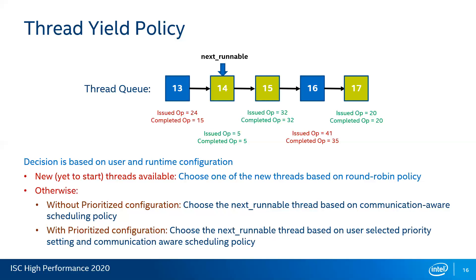In addition, we also provide the user an option to specify a prioritized configuration setting. A user might want to put a priority on a particular operation compared to another. For example, if the user is running an application with a put operation and an AMO operation, and wants to prioritize the AMO to be completed first, then the put operation — if the user specifies this configuration, we prioritize that first when selecting the next runnable thread, and after that is met, we use the communication-aware thread scheduling policy.